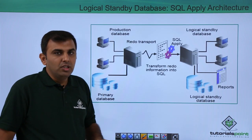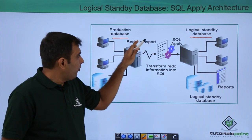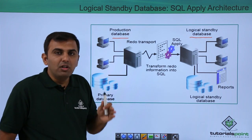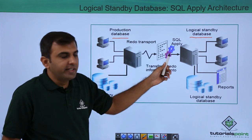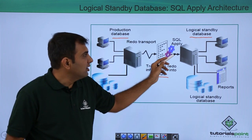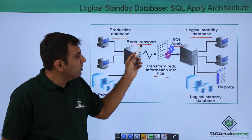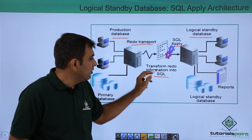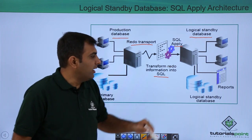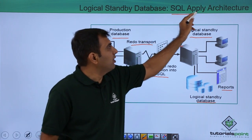Next, the architecture. The production database (primary) transfers redo data to the logical standby database. On the logical standby, the redo is converted into SQL statements, which are then executed. There is a SQL apply process and a redo transfer process. Once redo is transferred, it is transformed into SQL, and the SQL apply process executes those statements. This is called the SQL apply architecture.